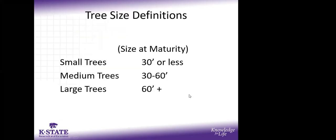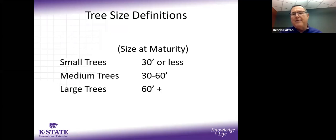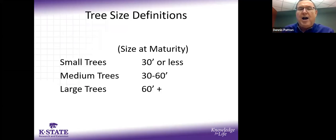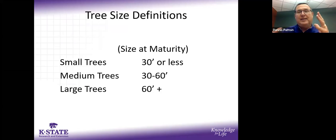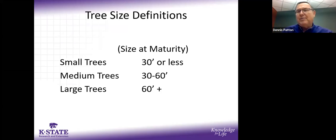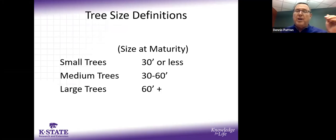In terms of size categories: small trees are 30 feet or less, medium are 30 to 60 feet, and large are 60 feet or over. In our wind and soil conditions, we don't have a lot of truly 60-plus-foot trees. Don't get too hung up on exact classifications — they're just buckets to lump things into, except when working near utility lines.